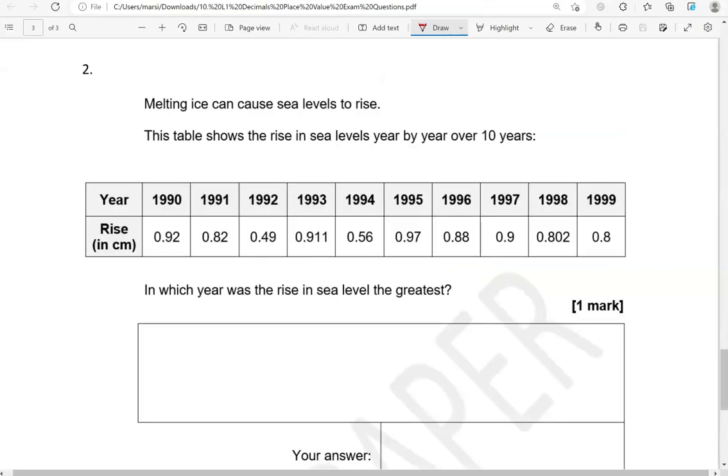Melting ice can cause sea levels to rise. This table shows the rise in sea levels year by year over 10 years. So we've got the years from 1990 to 1999, and we've got the rise in centimetres for each year.